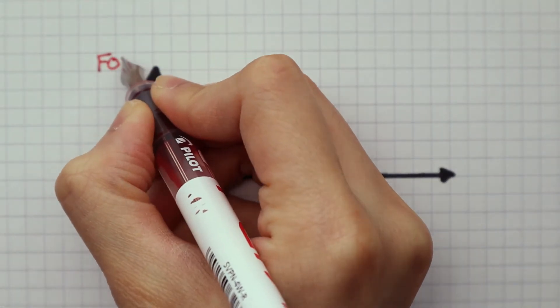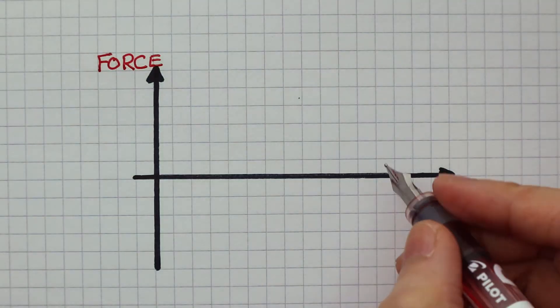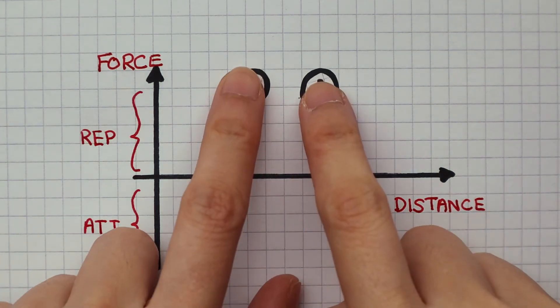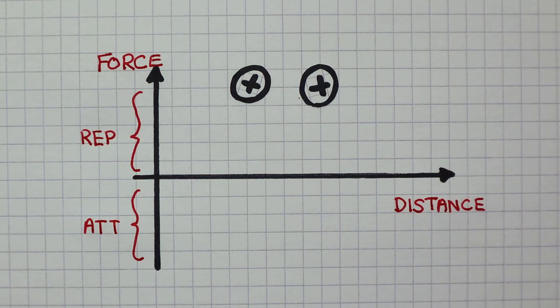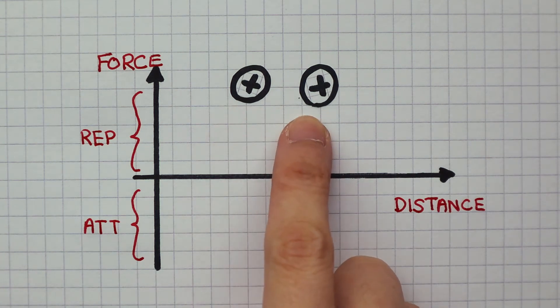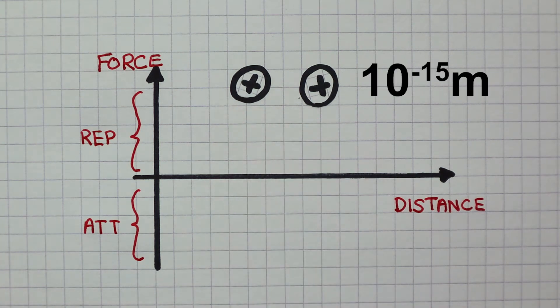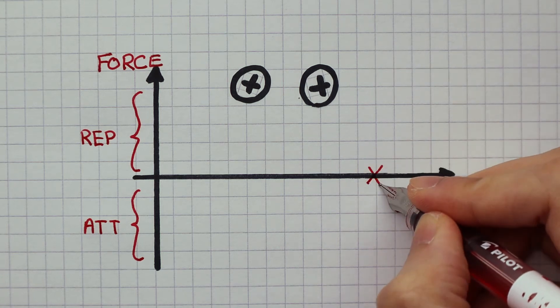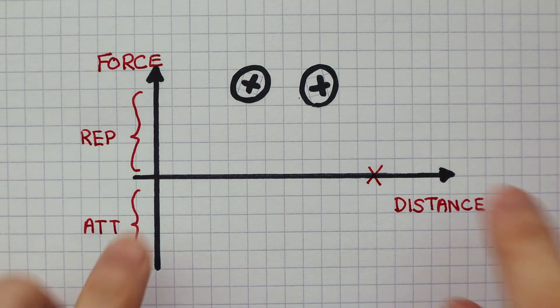We can look at the size of the strong nuclear force on a distance graph. This distance here is how far apart the protons are from each other. When the distance between them is approximately 10 to the power of minus 15 meters, the protons no longer exert or experience the strong nuclear force.